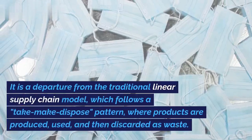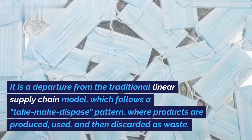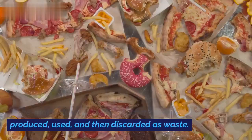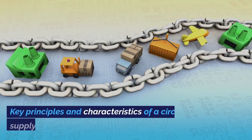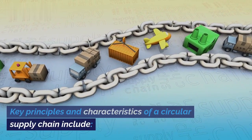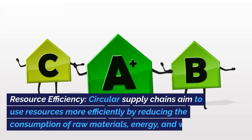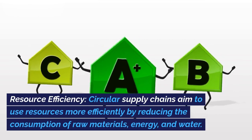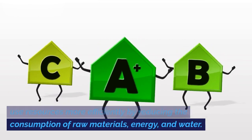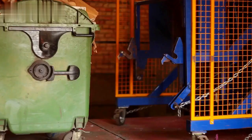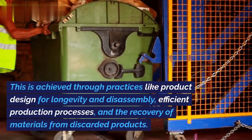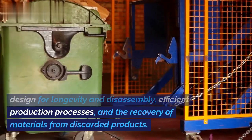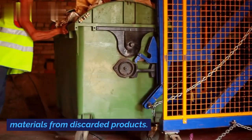It is a departure from the traditional linear supply chain model, which follows a take-make-dispose pattern, where products are produced, used, and then discarded as waste. Key principles and characteristics of a circular supply chain include resource efficiency. Circular supply chains aim to use resources more efficiently by reducing the consumption of raw materials, energy, and water. This is achieved through practices like product design for longevity and disassembly, efficient production processes, and the recovery of materials from discarded products.